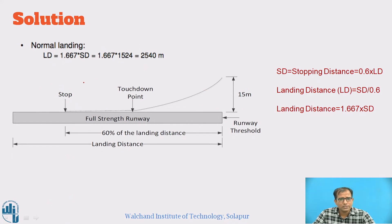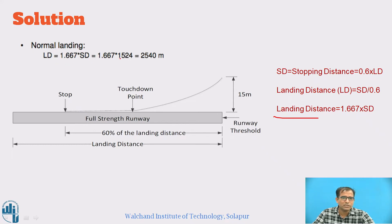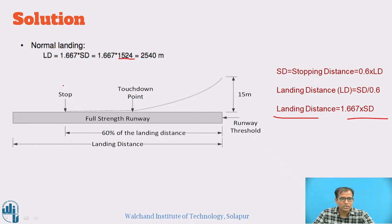For the normal landing case, the stopping distance SD equals 60% of the landing distance, so landing distance equals SD divided by 0.6. Using the relation: landing distance equals 1 divided by 0.6, which is 1.667, multiplied by SD. Given SD is 1524, we can calculate the landing distance for the normal landing case.